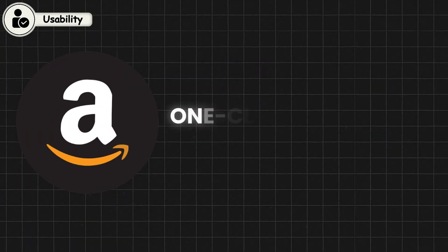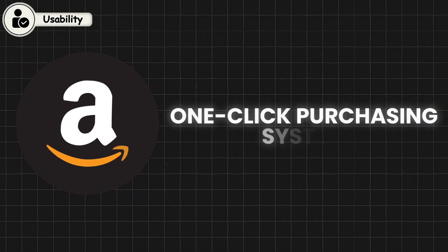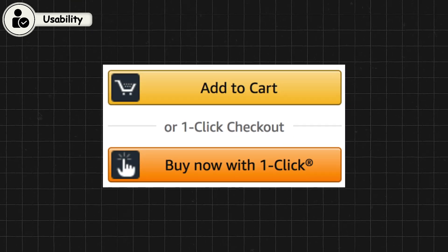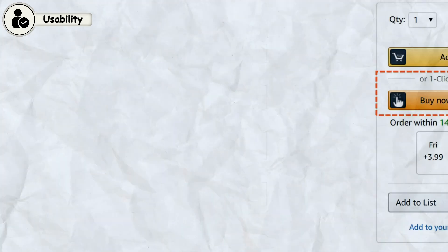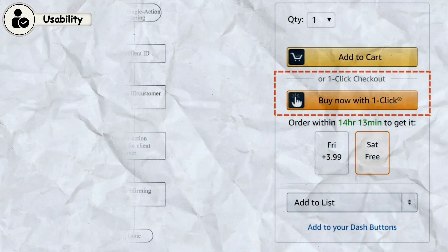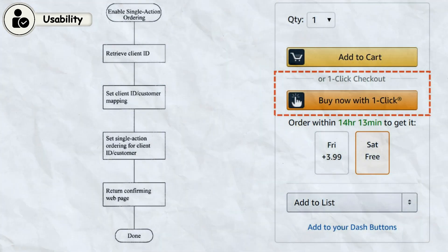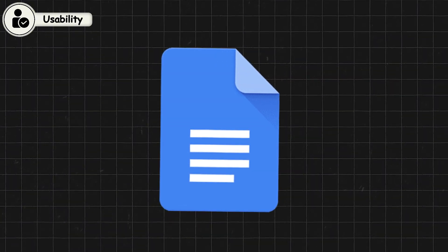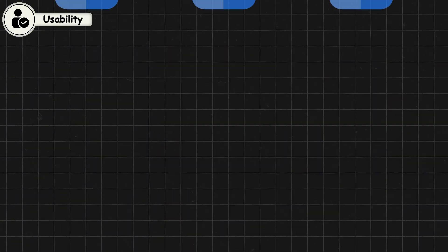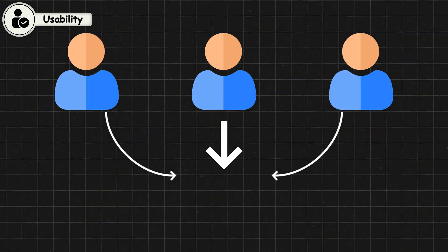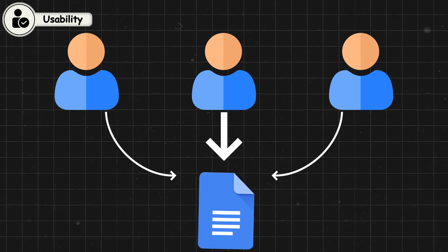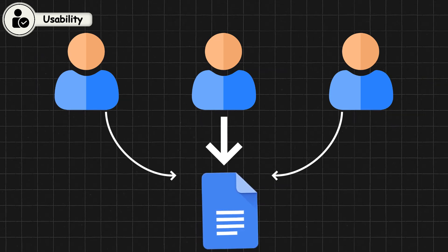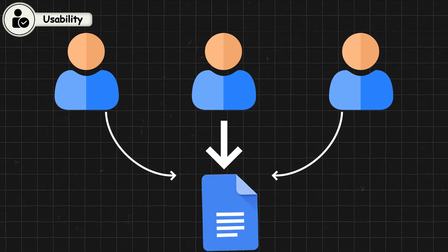Amazon's one-click purchasing system exemplifies excellent usability by simplifying the checkout process to a single action. Google Docs also strikes a balance between power and simplicity, allowing users to collaborate and edit documents in real-time without getting bogged down by complex features.